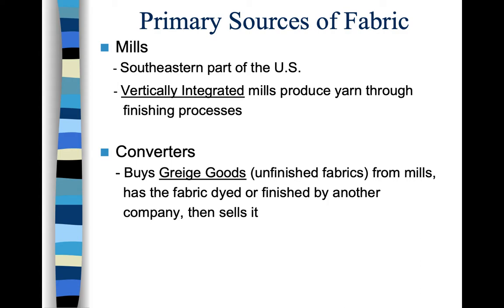Now we'll talk about where you can get fabric. Primary sources of fabric are the first level — where it comes from originally. The number-one primary source is the mill, since that's where fabric is made. Many mills sell fabric directly, and this happens a lot in the southeastern United States — places like Mississippi, Alabama, and Texas — where textile mills still produce and sell American-made fabric.